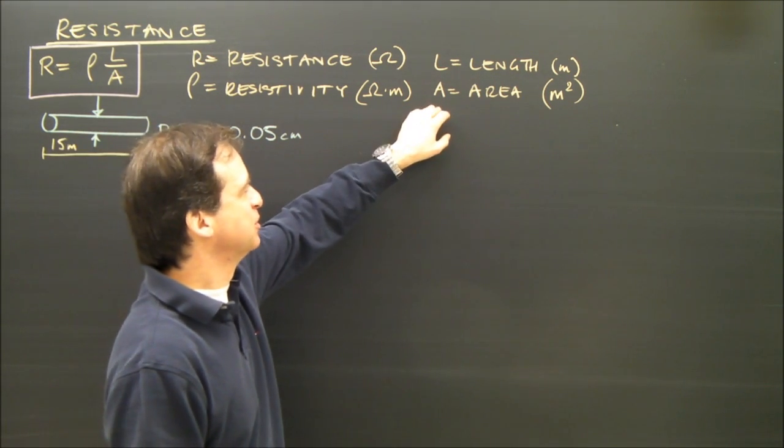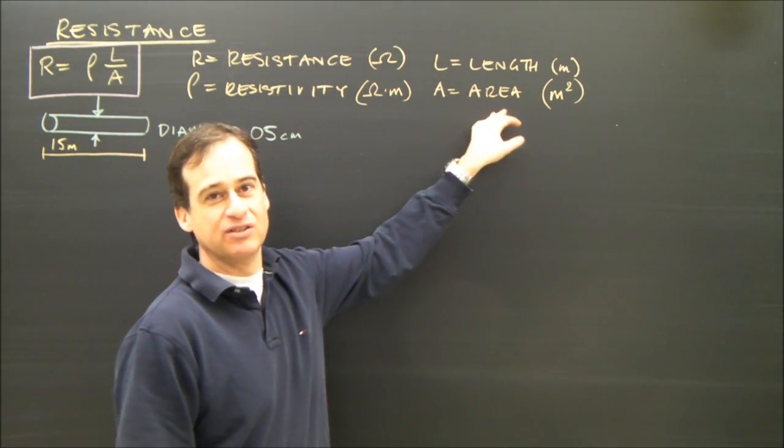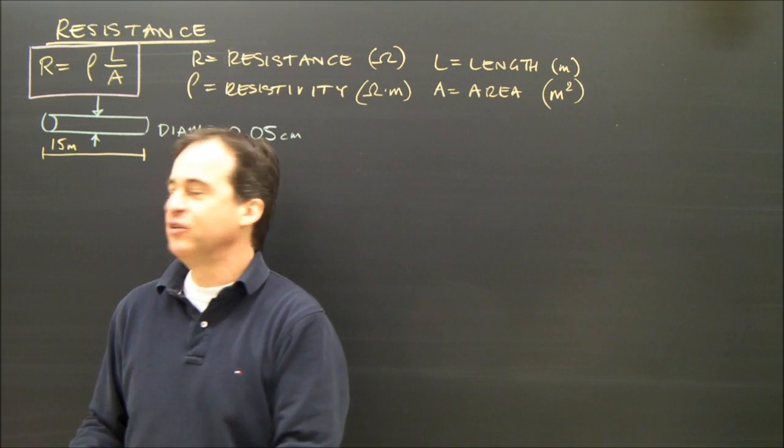The other variable is A, which is the area in meters squared. With this formula, really, this is where most of the work is, calculating the area. So let's try and use this formula.